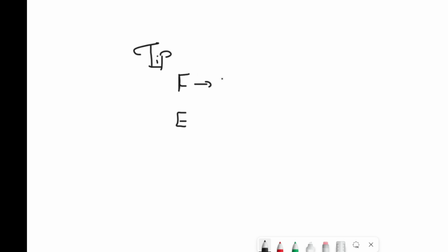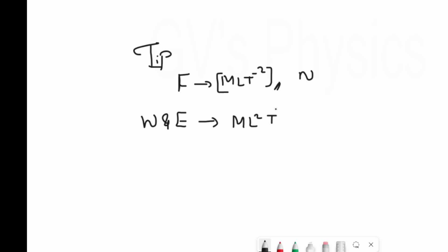The dimension formula for force is MLT⁻². Whatever be the type of force — gravitational force, electrostatic force, magnetic force — for all types of force you have the same dimension and the same unit, which is Newton. Similarly for work and energy, whatever be the type, for all types of work and energy you have the same dimension: ML²T⁻², and the unit will be Joule.